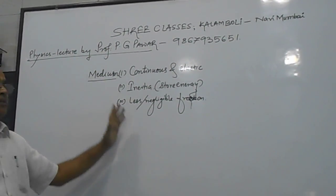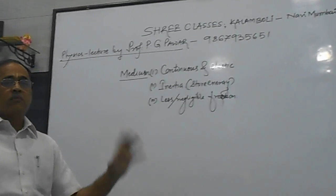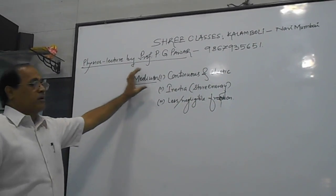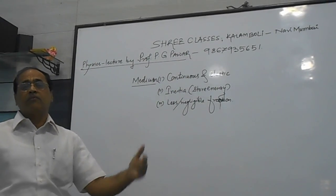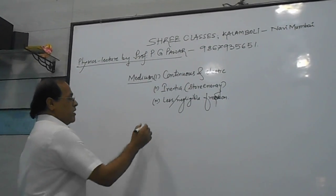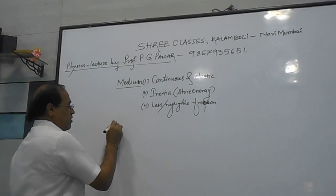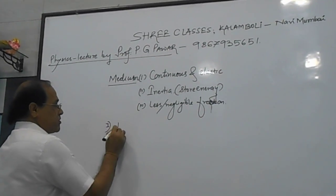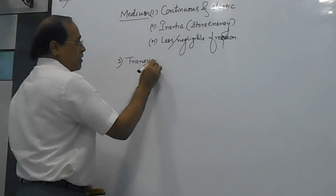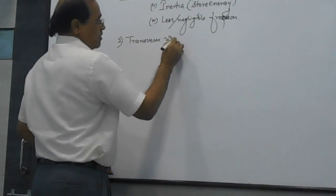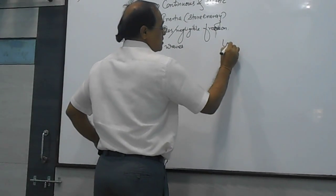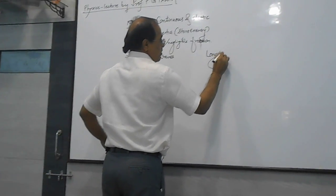These are the three basic requirements of the medium. If any one of these is absent, then that medium will not support the travelling or propagation of the wave. As we have seen, there are two types of waves: first, transverse waves, and secondly, longitudinal waves.